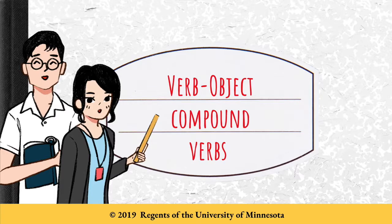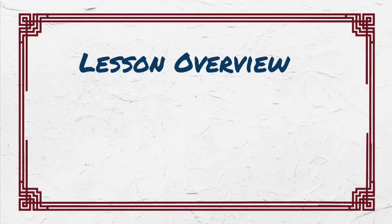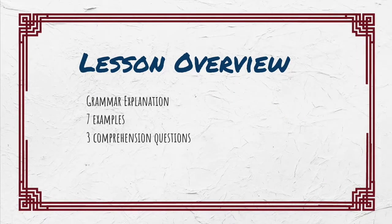大家好. In this lesson, we will introduce the structure for most Chinese verbs: verb object. This lesson presents a short grammar explanation, examples, and comprehension questions.